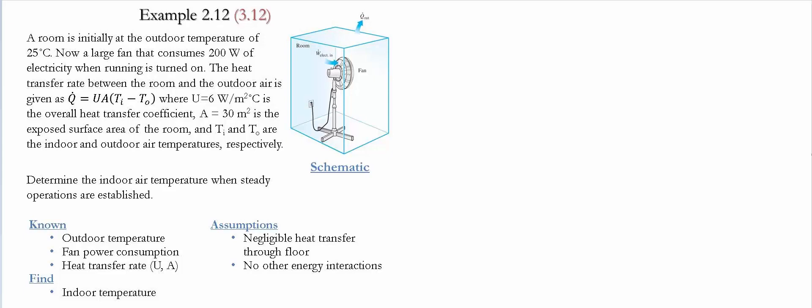times Ti minus T naught, where U is the overall heat transfer coefficient, A is the exposed surface area of the room, and Ti and T naught are the indoor and outdoor temperatures, respectively.